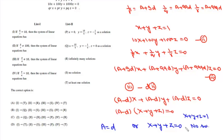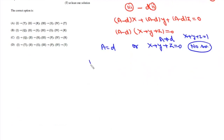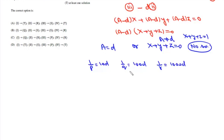So if A ≠ d, there is no solution. If A = d, then 1/P = 10d, 1/Q = 100d, and 1/R = 1000d. Dividing the second by the first gives P/Q = 10.